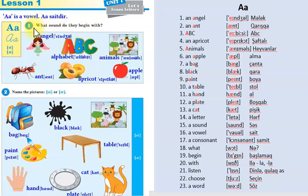Let's begin. One: what sound do they begin with? Hansı səslərlə başlayır? Angel, angel. Mələk deməkdir angel. Alphabet or ABC - you can also say ABC or alphabet. Animals - a. It begins with the sound a. Ant - a, apricot - a, apple - a.